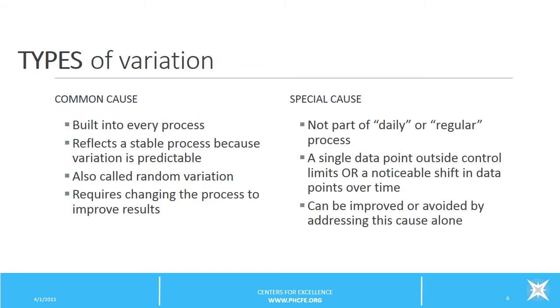Let's review types of variation briefly, though we cover this in more detail in another tutorial. There are two types of variation that we'll discuss, common cause and special cause. Common cause is built into our processes, reflecting a process that is stable with variation that is predictable.